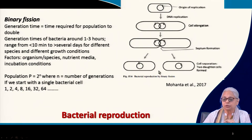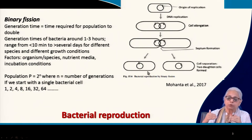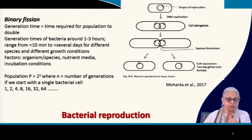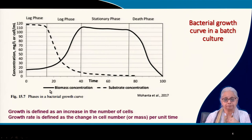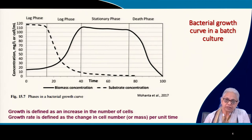This schematic shows one generation. If 2 becomes 4, that is two generations. Starting with a single bacterial cell we get 1, 2, 4, 8, 16, 32, 64, and so on — that is the nature of reproduction in bacterial cells.